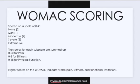To score the WOMAC, it's available in visual analog and Likert box forms. The test questions are scored on a scale of 0 to 4, corresponding to none being 0 and extreme being 4. The scores for each subscale are then summed up with a possible score range of 0 to 20 for pain, 0 to 8 for stiffness, and 0 to 68 for physical function. A sum of all three subscales gives a total WOMAC score, with higher scores indicating worse pain, stiffness, and functional limitations.